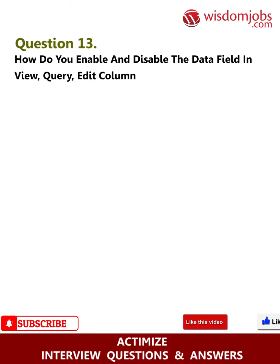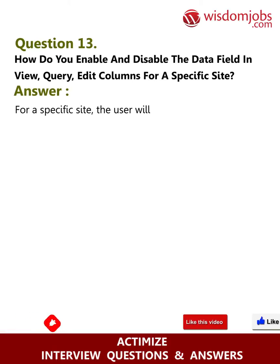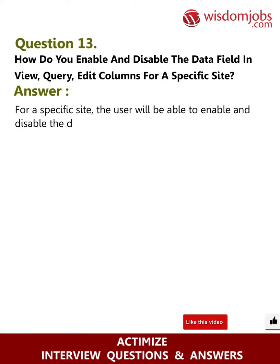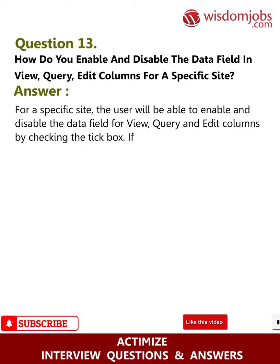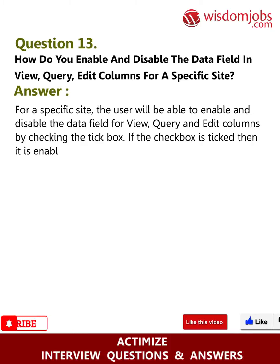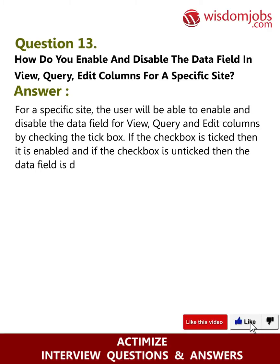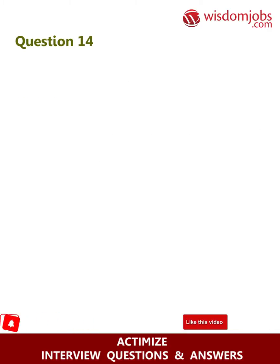Question 13: How do you enable and disable the data field in view, query, and edit columns for a specific site? Answer: For a specific site, the user is able to enable and disable the data field for view, query, and edit columns by checking the tick box. If the checkbox is ticked, it is enabled; if the checkbox is unticked, the data field is disabled.